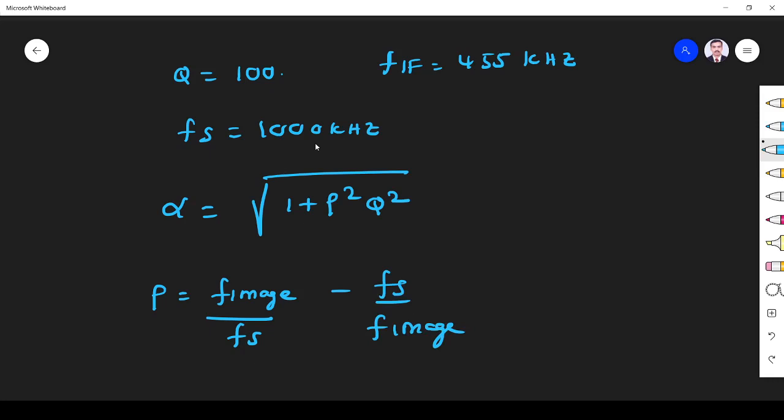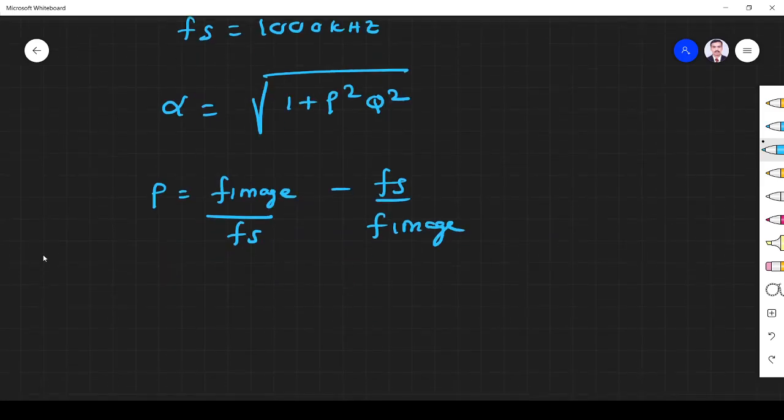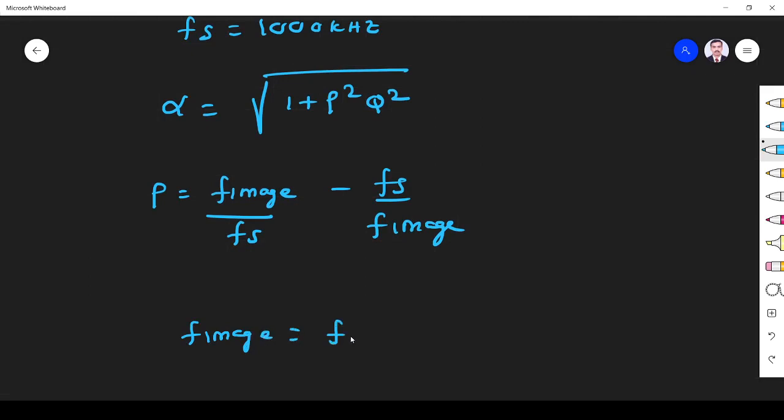I know f_s value. f_image I don't know. f_image is given by f_s plus 2 f_IF. If you have any doubt please refer my video on superheterodyne receiver.